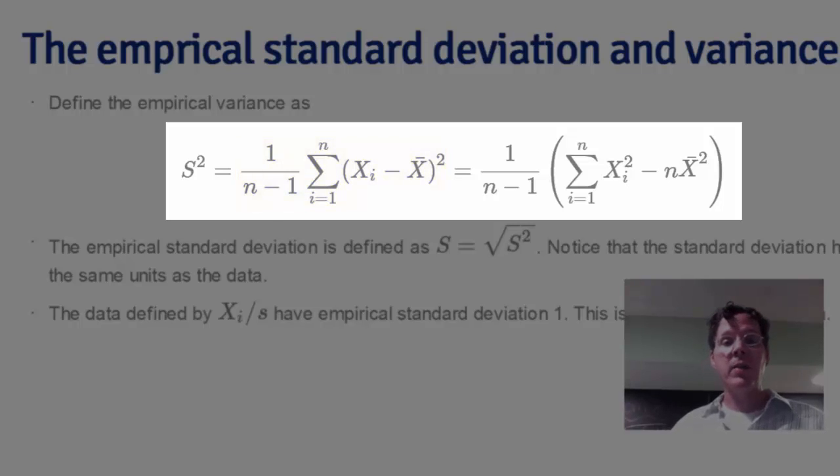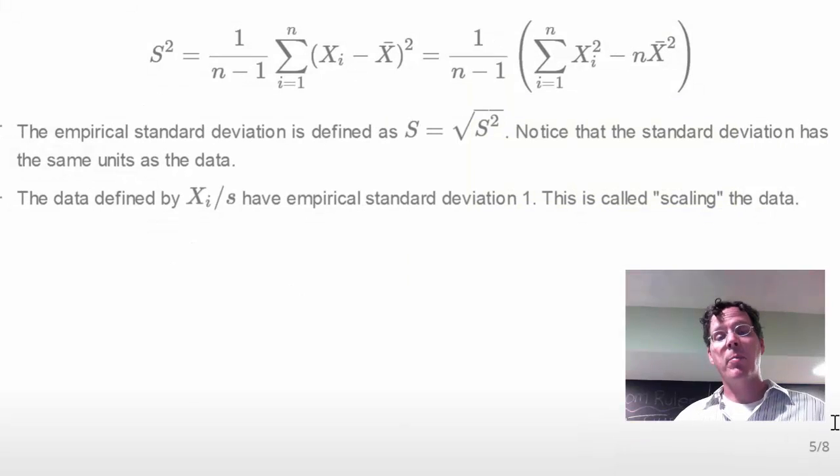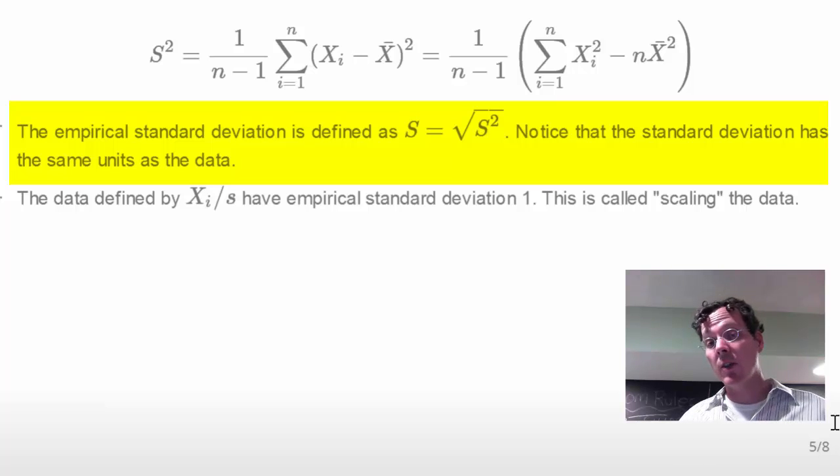The empirical standard deviation is simply the square root of the variance. And it's nice to work with standard deviations because the variance is expressed in whatever units X has squared, whereas the standard deviation is just expressed in the normal units of X.